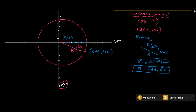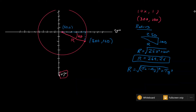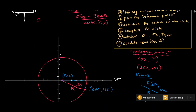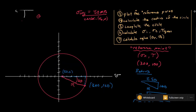We can also write a general equation for the radius: R = √((σx − σ_average)² + τxy²). Now let's move on — the next step is to calculate the principal stresses.